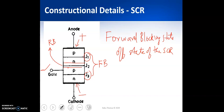To summarize: with anode positive, cathode negative, and gate in open circuit, junctions J1 and J3 are forward biased with J2 in reverse biased condition. Therefore only a negligible leakage current flows through the device, which is not sufficient to make the device enter conduction mode.